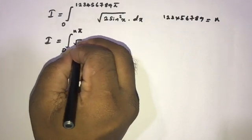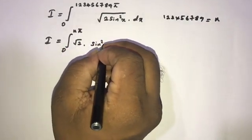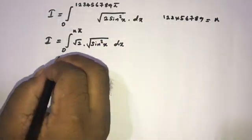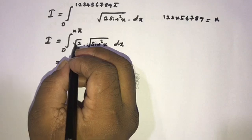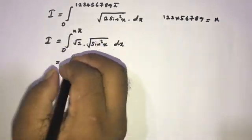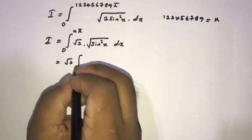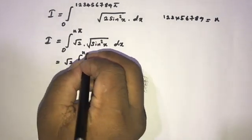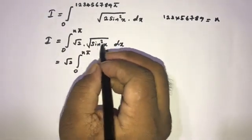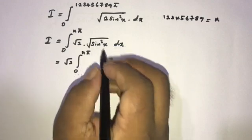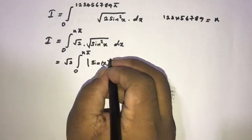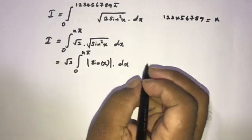Now here, square root of 2 is a constant, so we can write it outside of the integral. So we have square root of 2 times the integral from 0 to n times 5 of the square root of sine squared of x. We know this is equal to the absolute value of sine of x.